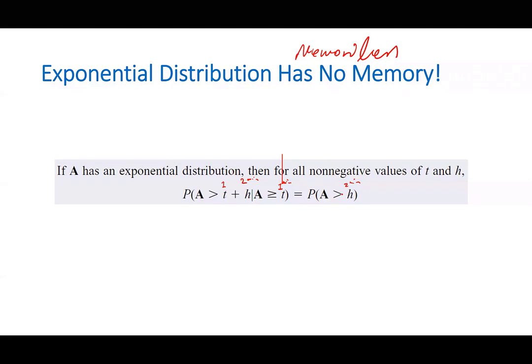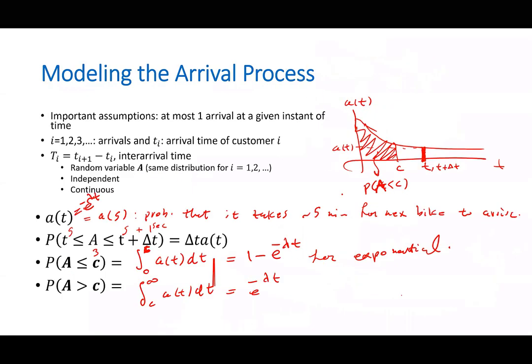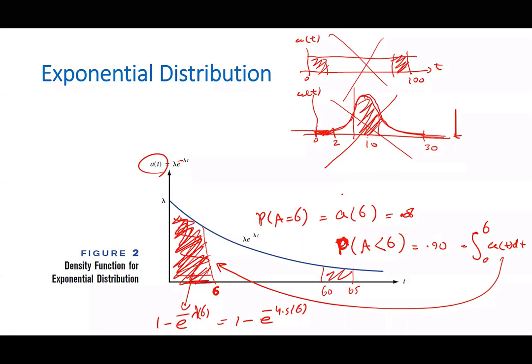Sometimes you wait and you don't see anything. Because these arrivals are independent, and because of this distribution, the inter-arrival time could be anything — it could be six minutes, it could be 65 minutes, it could be 100 minutes or anything. Although the probability goes down, it's still possible.